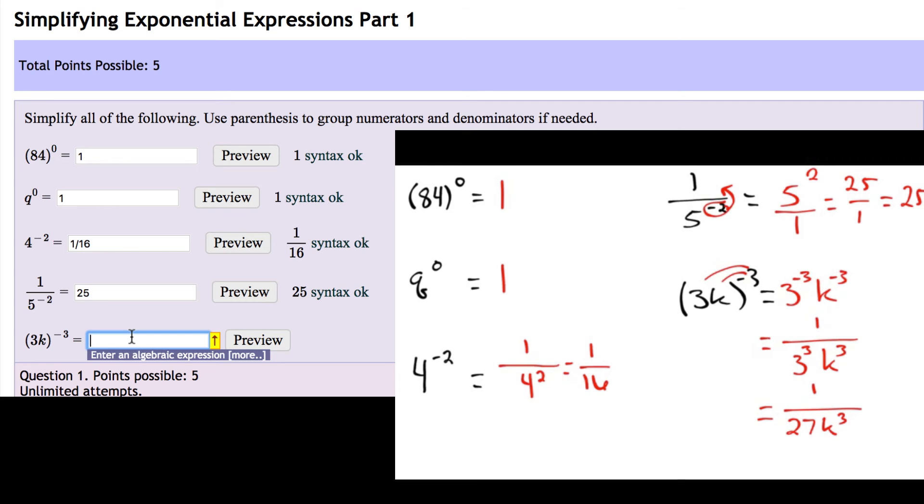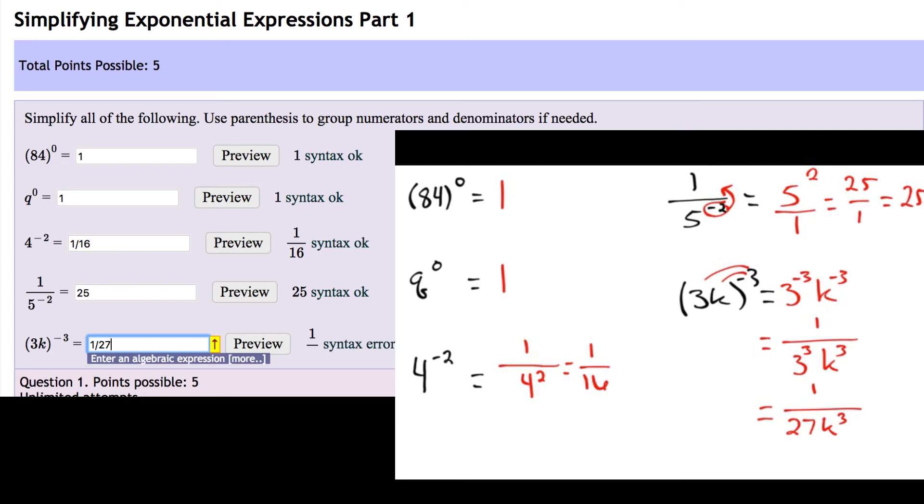And lastly, this is where we need a little bit of practice. So it's going to be 1 over, now if you just type 27k to the power of 3, you'll notice this k to the power of 3 comes to the outside. And I need that down in the denominator.